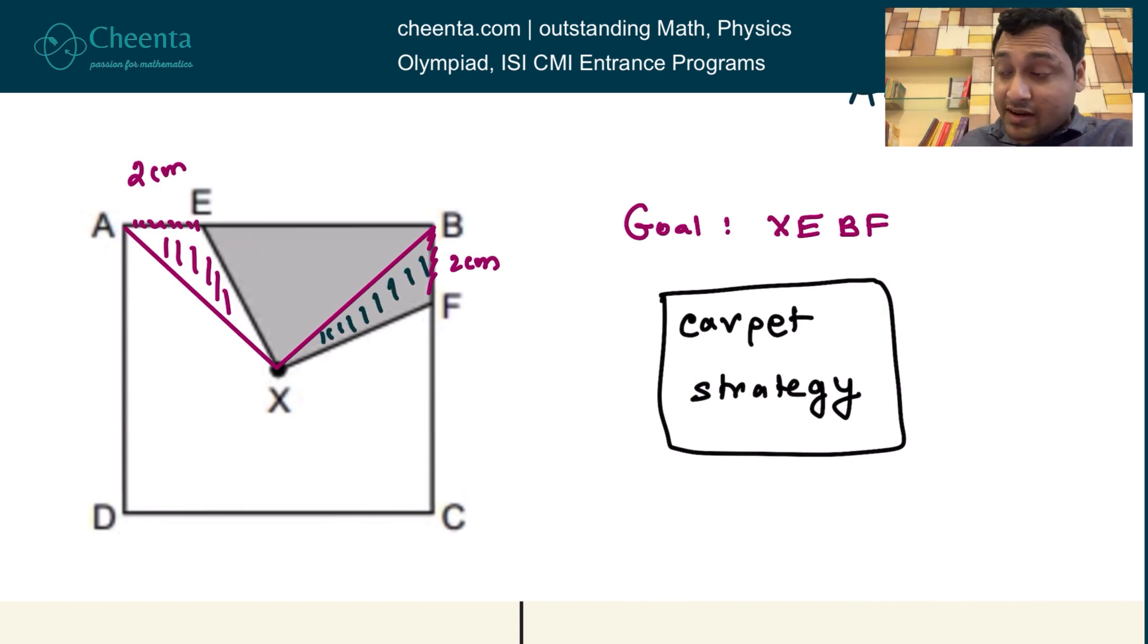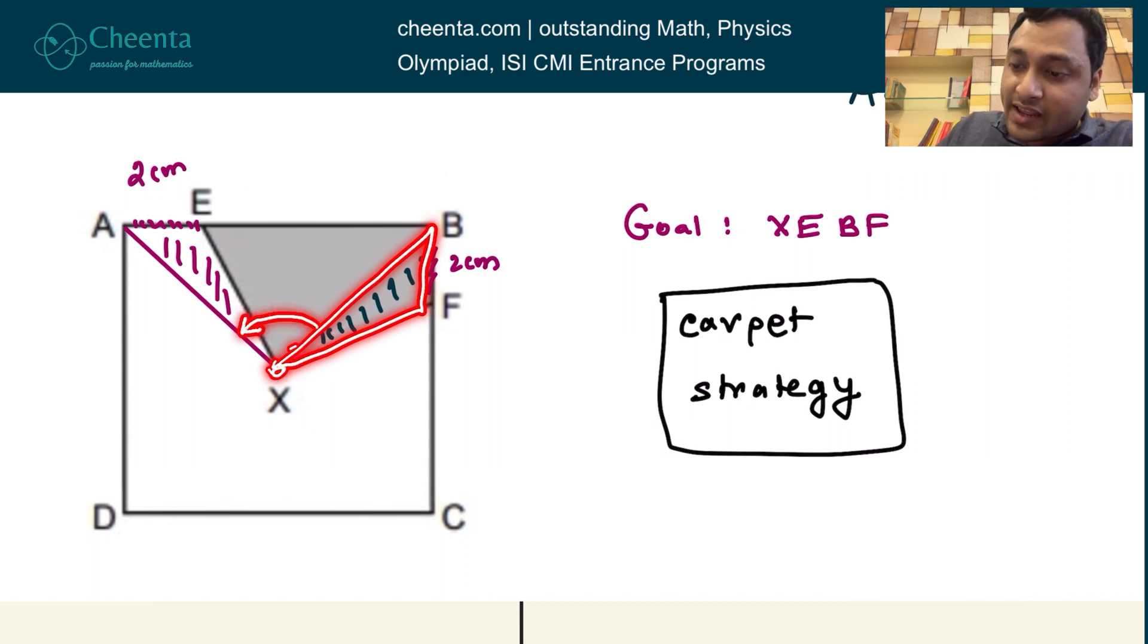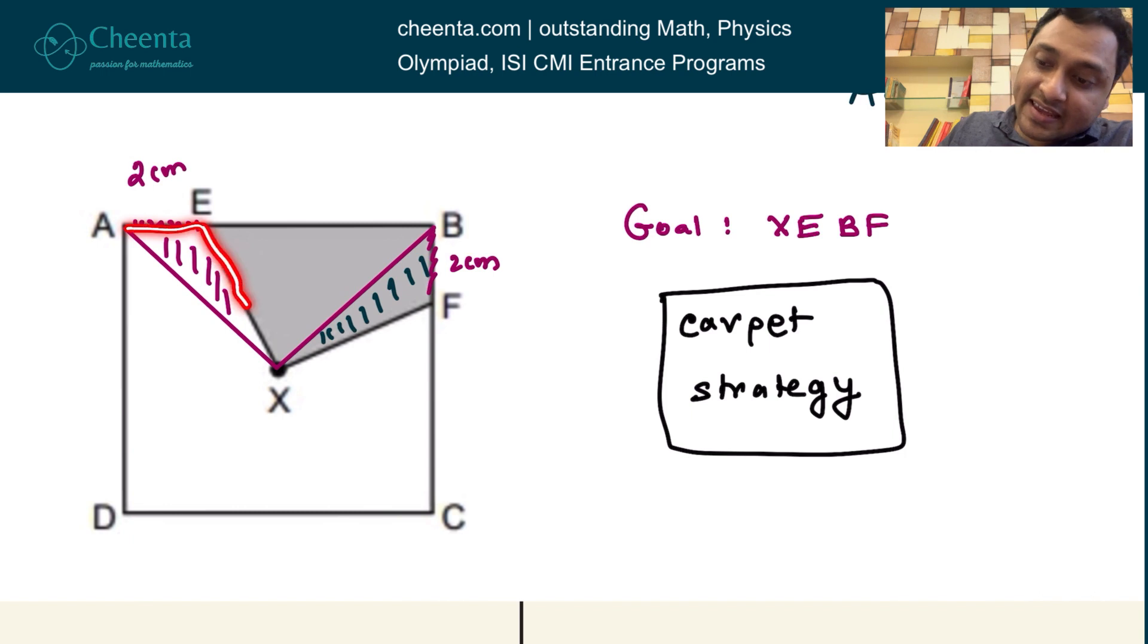Can you tell me in the comment, maybe you can pause the video here and tell me, what is the relationship between these two triangles? There's a very beautiful relationship, actually. You can rotate this triangle about X, you can rotate the triangle BFX so that it exactly falls on AEX.